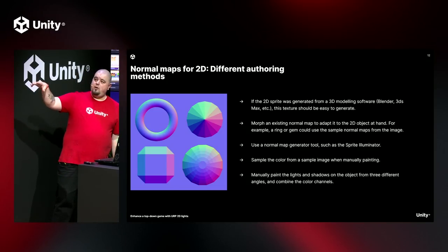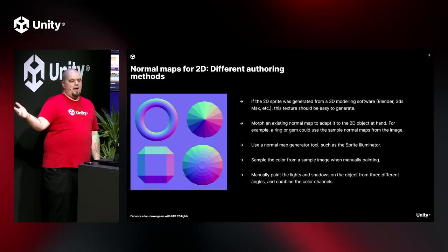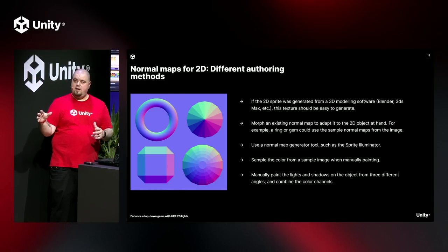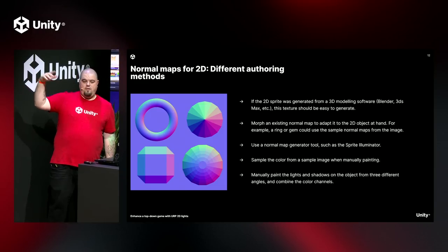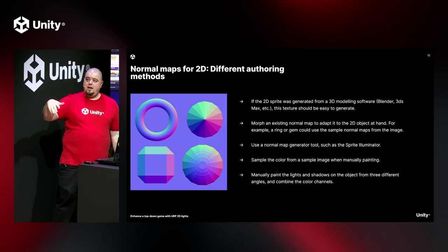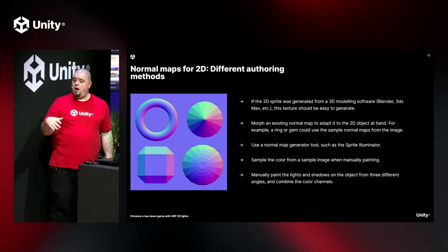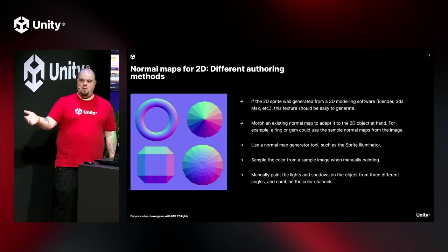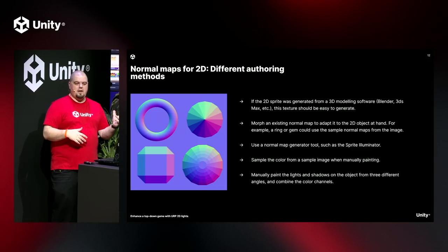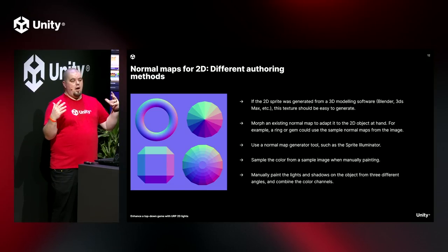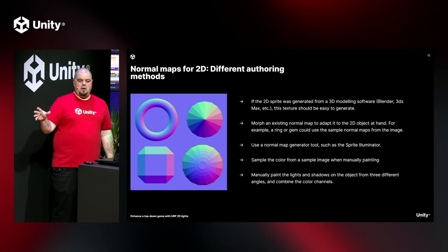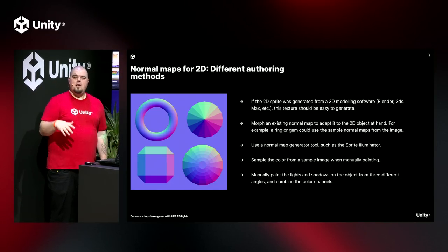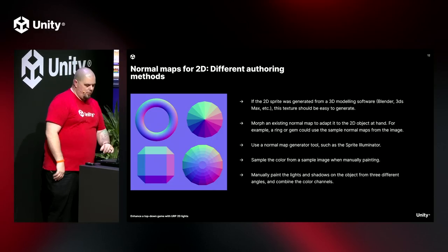There are a lot of different ways to get a normal map for your asset. If you make it in a 3D space like Blender, you can bring it in and it will function correctly. There are special generators like Sprite Illuminator that can help you generate a normal map. You can also manually paint them. Look at what your team's skill set and resources are, because some of these methods are more time-consuming than others — pick what works best for your team to get the best normal map possible.